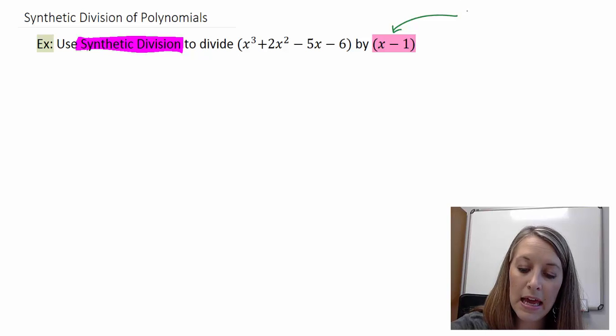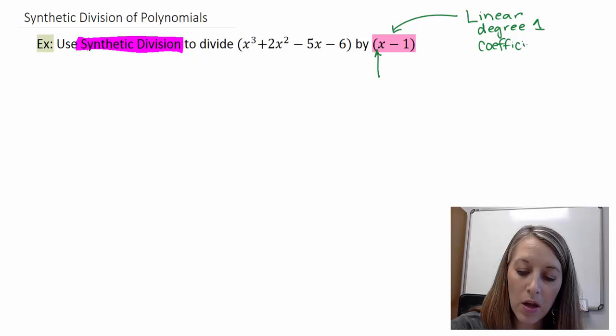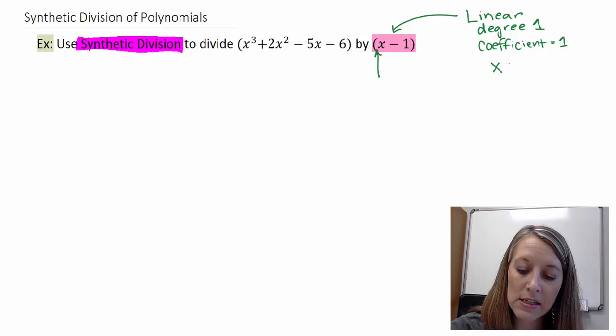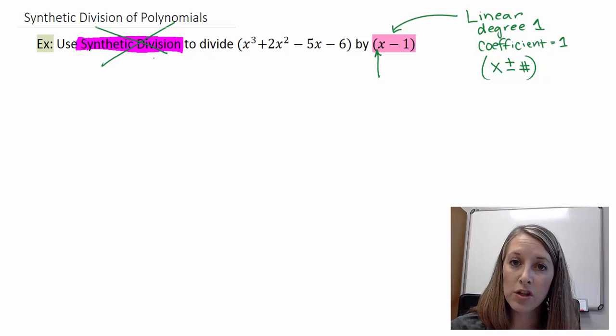My divisor has to be a linear polynomial, meaning degree 1, and my coefficient on my x variable can only be 1 as well. So it has to be degree 1, and my coefficient can only be 1 as well. So specifically, it can only be in the format as x plus or minus a number. If it is something other than this format here, then synthetic division is not an appropriate process, which is why we need long division in the first place. If it is in this format, then you are more than welcome to use synthetic division on these types of problems. And so let us actually discuss how to do synthetic division at this time.